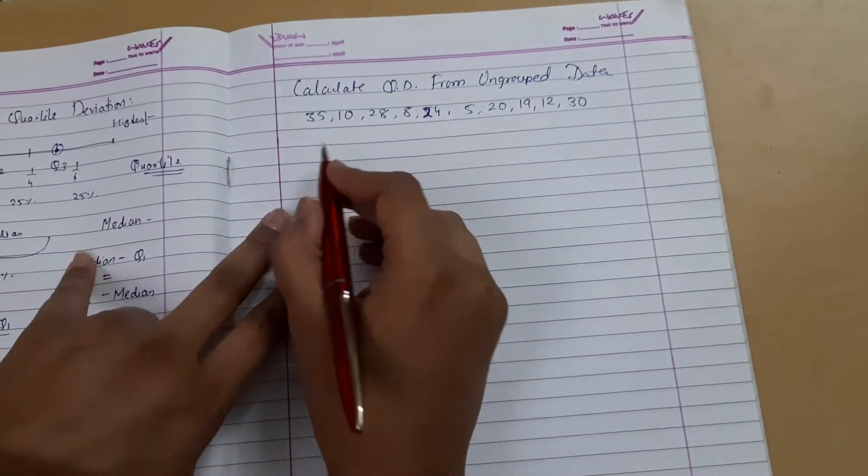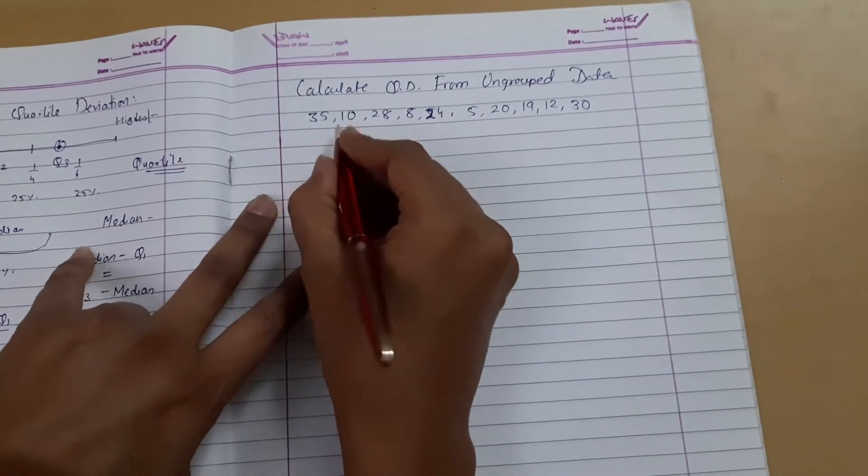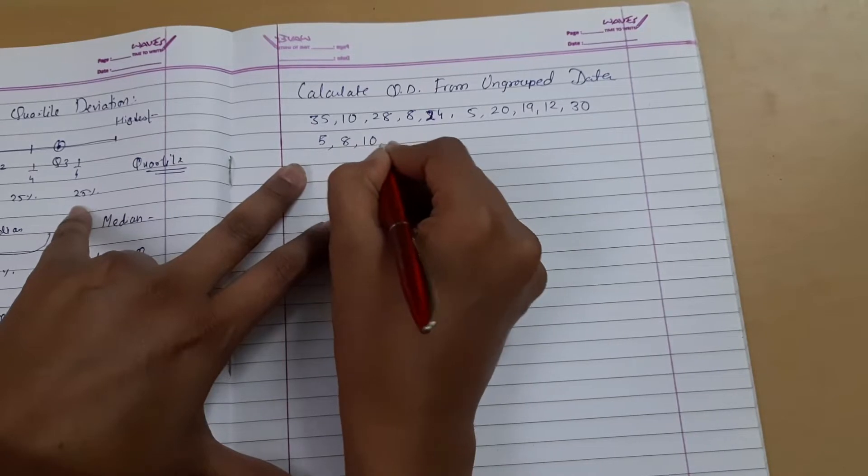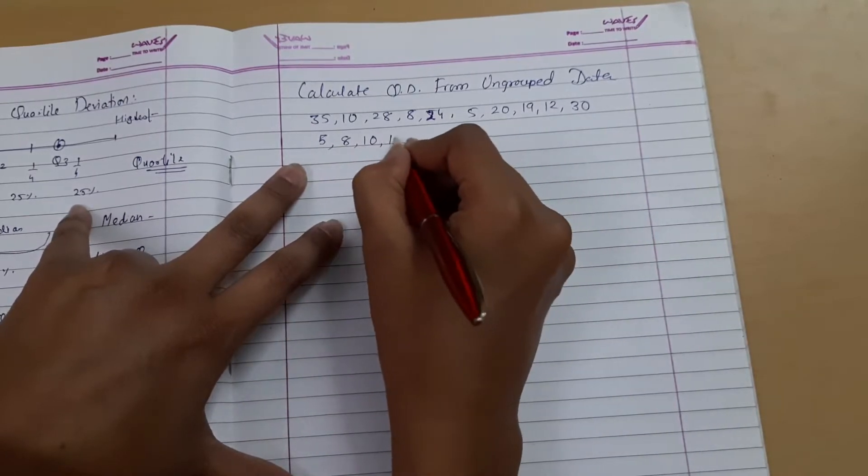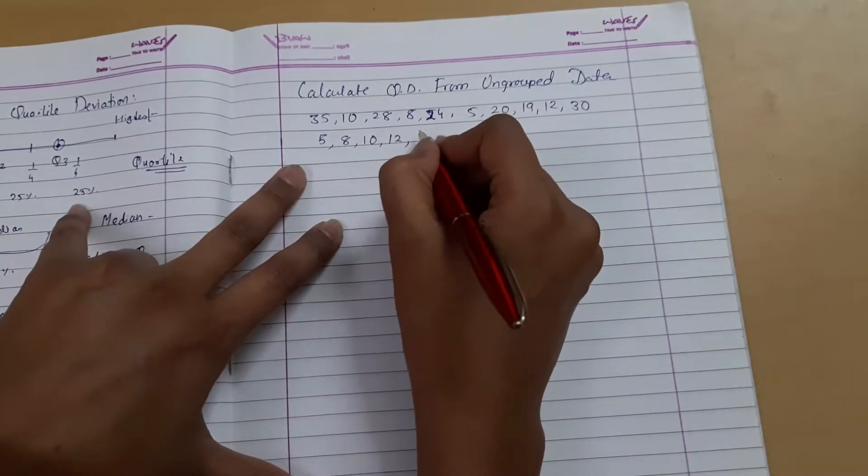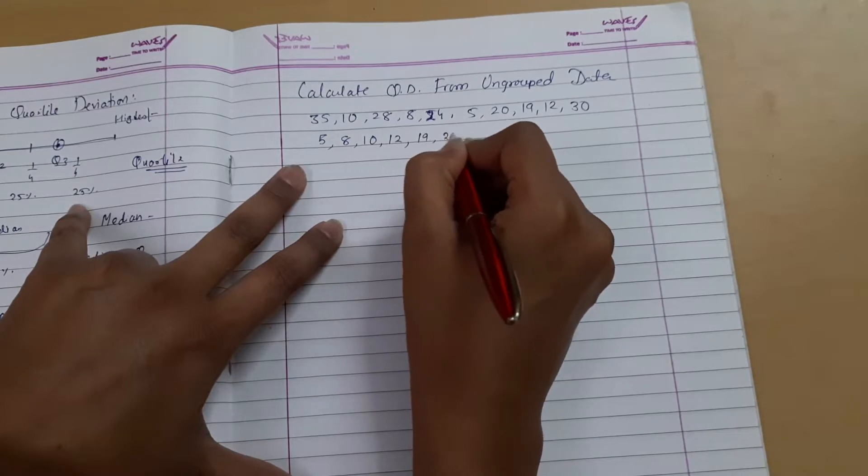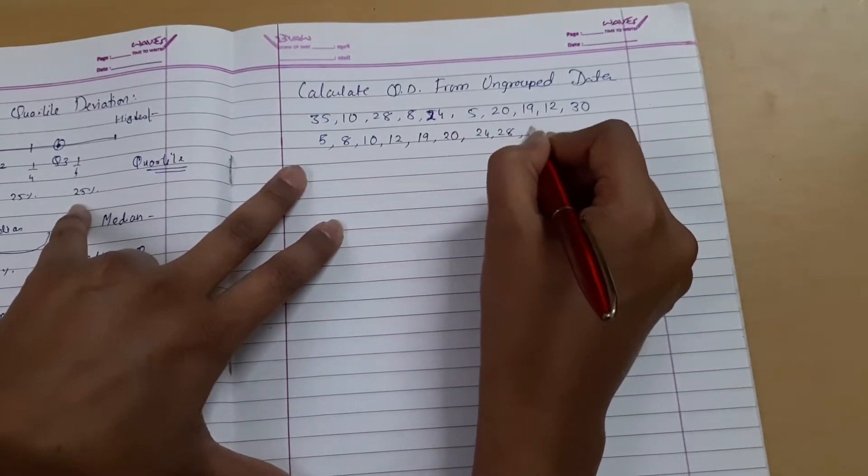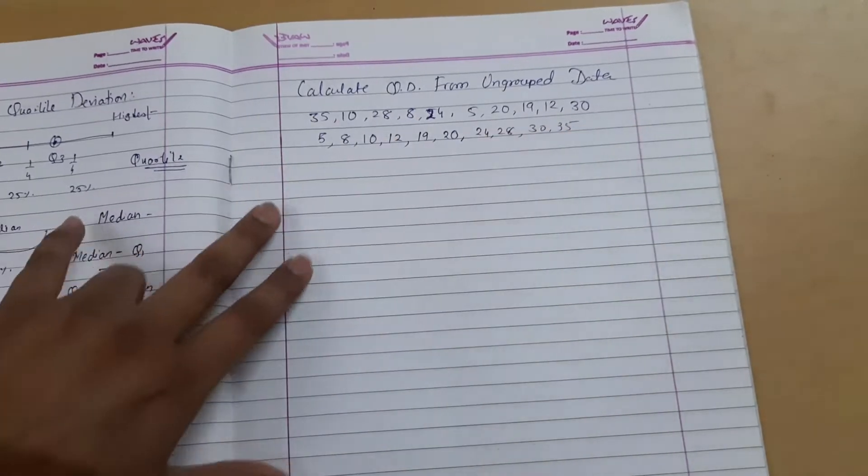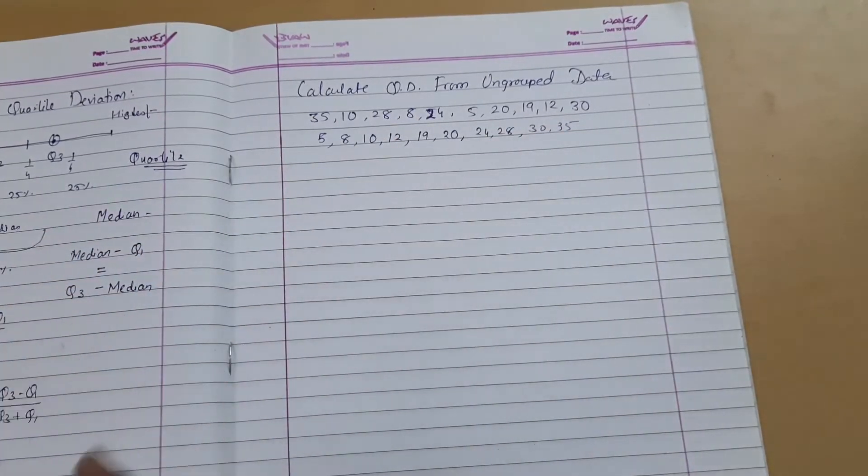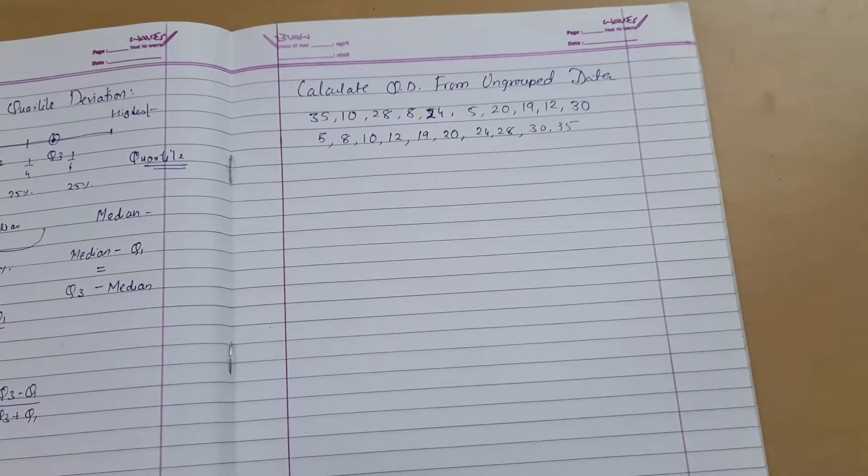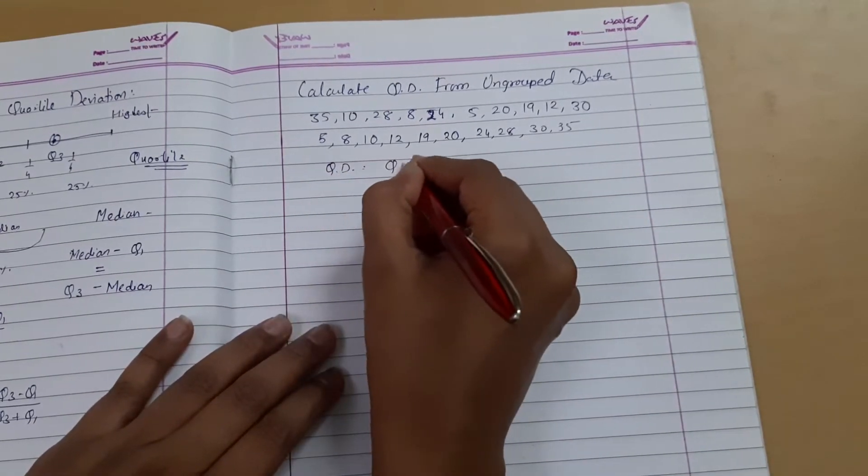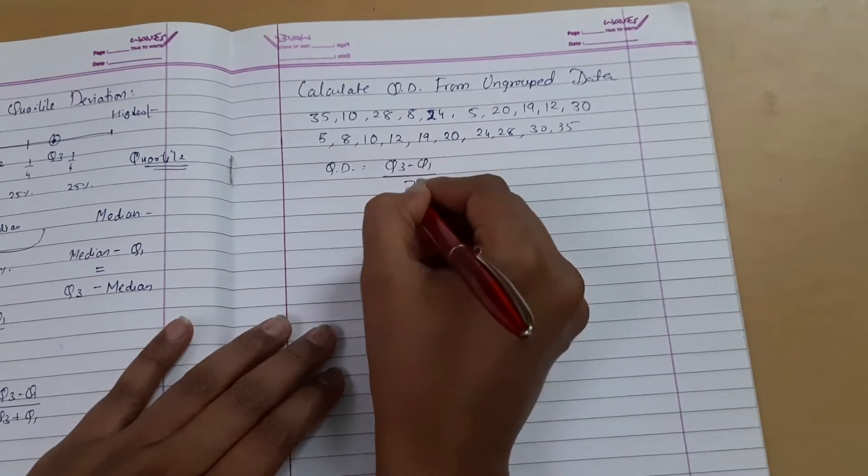Let me do it first. We arrange the data in ascending order: 5, then 8, then 10, 12, 19, 20, 24, 28, 30, and 35. After arranging, we start with the quartile deviation equation, that is Q3 minus Q1 divided by 2.